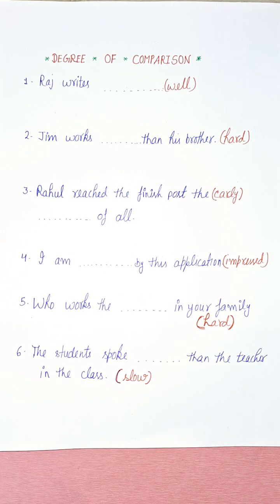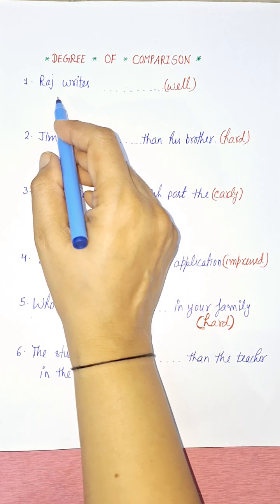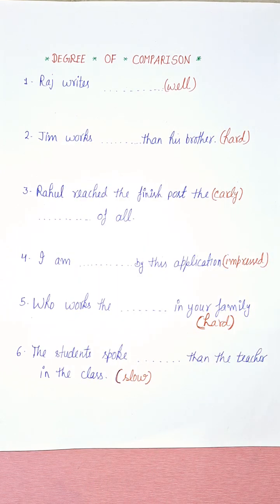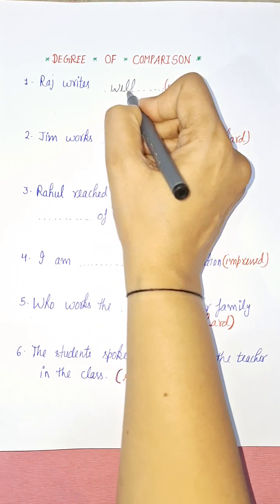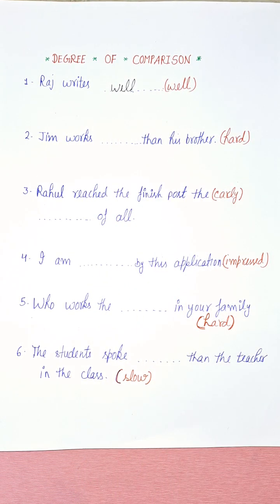Now let's discuss degree of comparison using sentences. First sentence: 'Raj writes well.' There is no comparison being made here, so it is positive degree. This adjective will remain the same — Raj writes well.